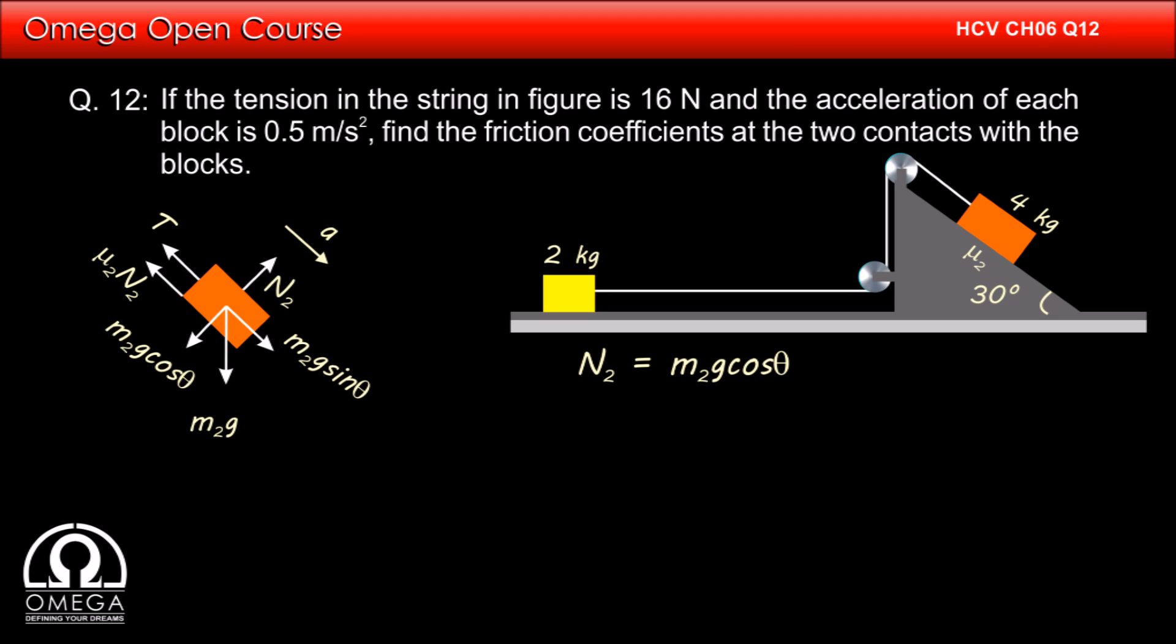Balancing forces in direction perpendicular to the incline, we get N₂ is equal to M₂g cos θ. Putting the values, we get N₂ is equal to 40 into root 3 by 2 that is 20 root 3.